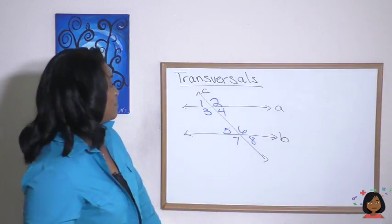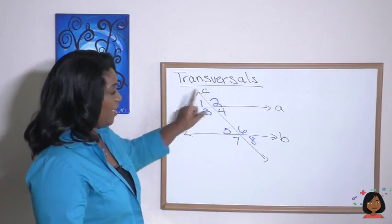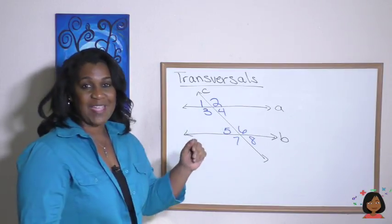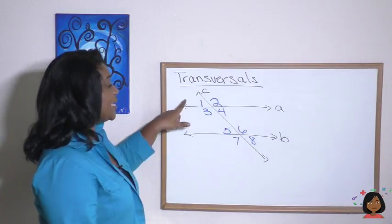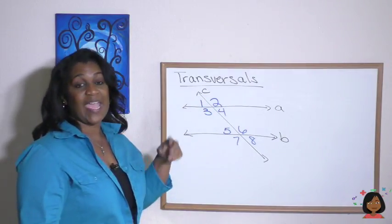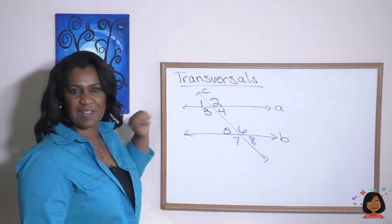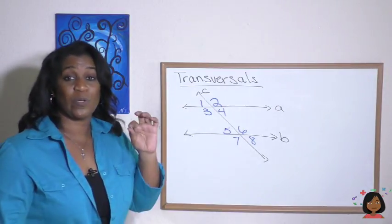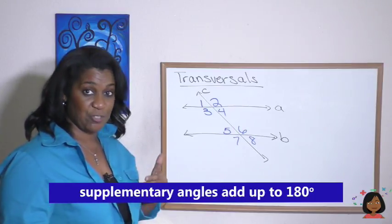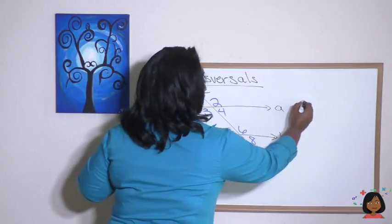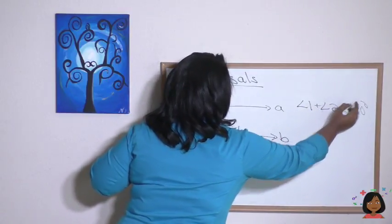First of all, eight angles are formed — there's one here, one there, and so on. There are a number of fascinating things that happen with some of the pairs. Let's take a look at angle 1 and angle 2. See how their back ends form a straight line? These form what's called supplementary angles. Supplementary angles always add up to 180 degrees, so angle 1 and angle 2 are supplementary.